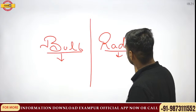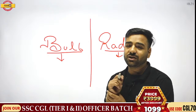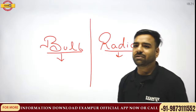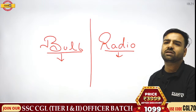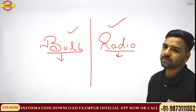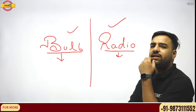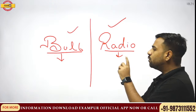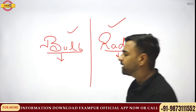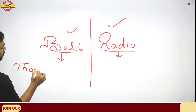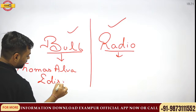Now a question for everyone: who discovered the bulb? And second question — who discovered the radio? These are very basic questions studied in the 4th or 5th standard, but asked in competitive exams. The answer for the bulb is Thomas Elva Edison — totally correct. For the radio, it is also asked many times in examinations.